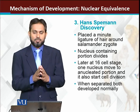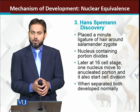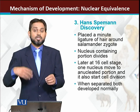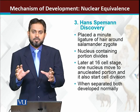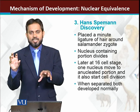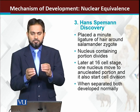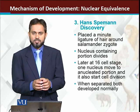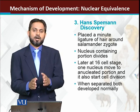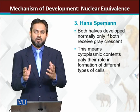In this way, Spemann drew conclusions: Number one — for the developmental process, the nucleus is essential. Number two — the nucleus contains all the genetic information, since when a nucleus moved to the other side at the 16-cell stage, that side also developed into a complete larva. Number three — the gray crescent is also required for the developmental process; without the gray crescent, abnormal development will occur.